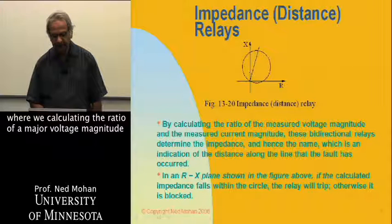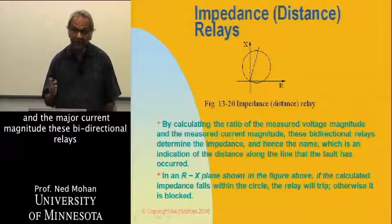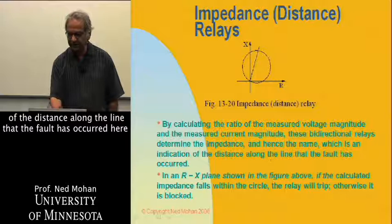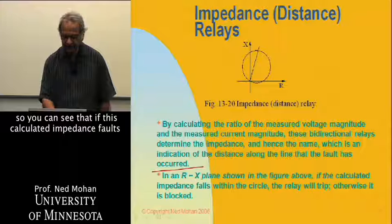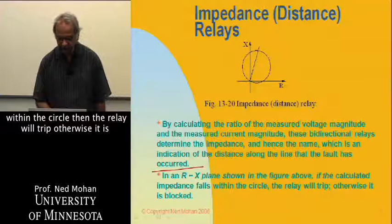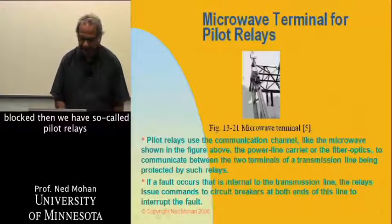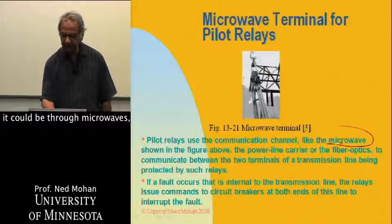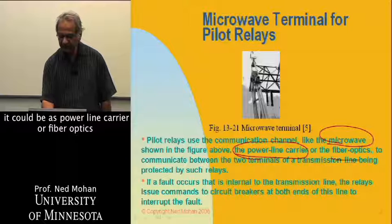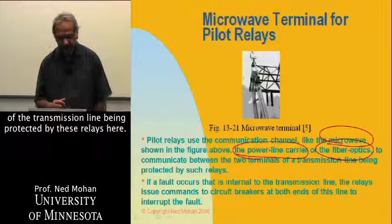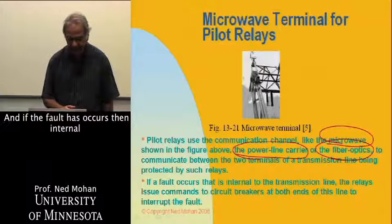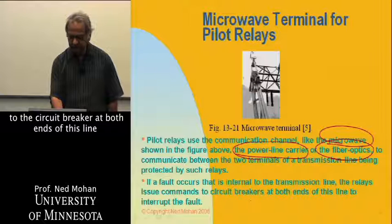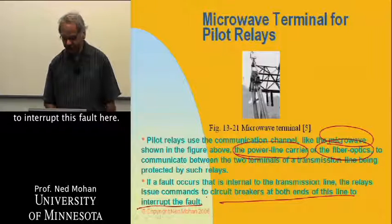Then we have impedance relays, where by calculating the ratio of the measured voltage magnitude and the measured current magnitude, these relays determine the impedance — an indication of the distance along the line where the fault has occurred. If this calculated impedance falls within the circle, the relay will trip; otherwise it is blocked. Then we have pilot relays, where there is a communication channel — it could be through microwaves, power line carrier, or fiber optics. They communicate between the two terminals of a transmission line, and if a fault is internal to the transmission line, relays issue a command to the circuit breakers at both ends to interrupt the fault.